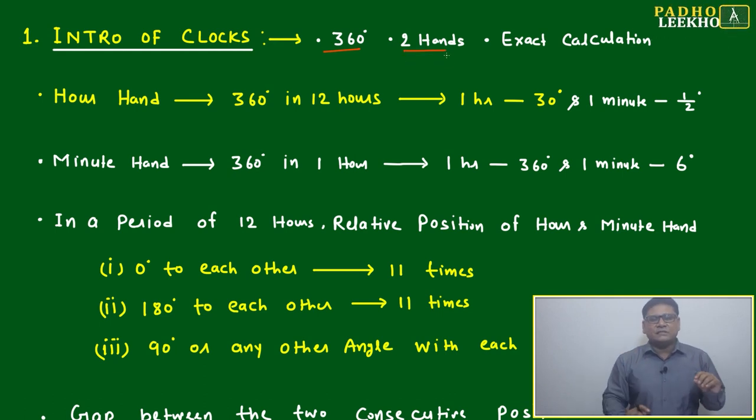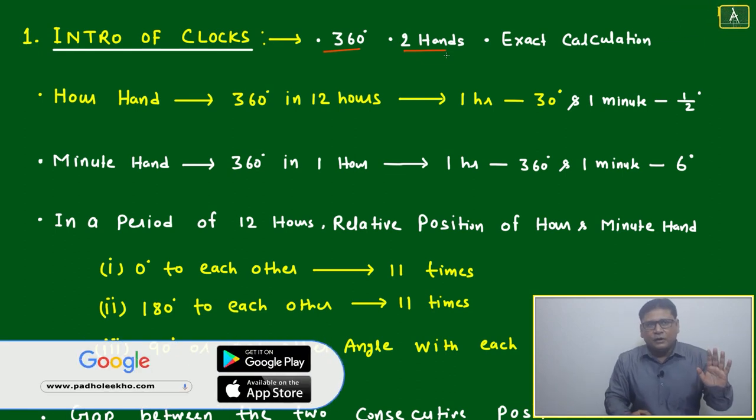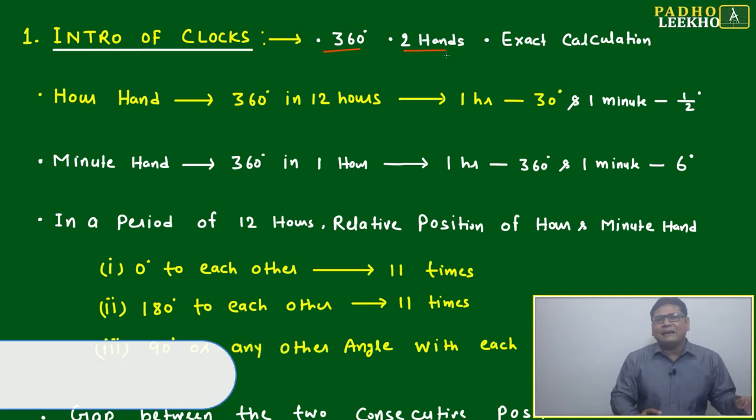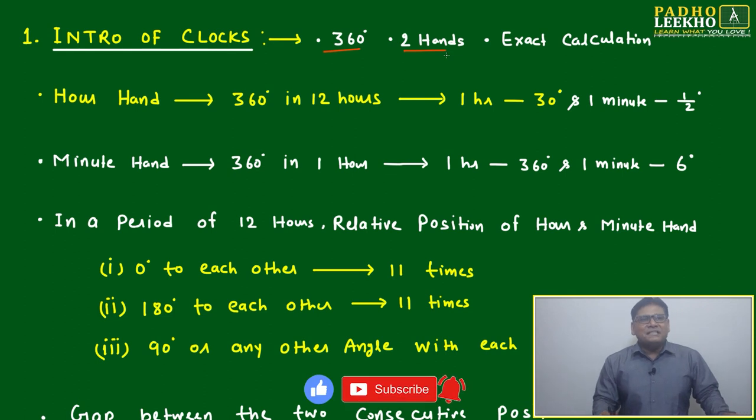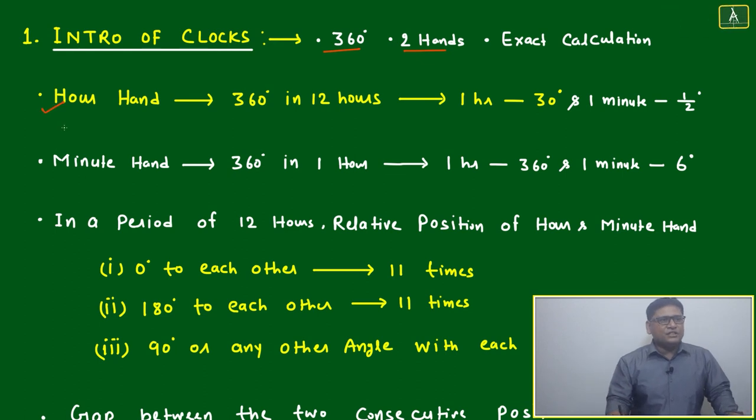If any watch dial is there, generally we have hours hand, minute hand, and second hand. The second hand will complete one complete rotation of 360 degrees in one minute itself. For mathematical calculation purposes we will not consider that. Mainly we will consider these two - hours hand and minutes hand - and based on that only questions will be created. This is 360 degrees in 12 hours.